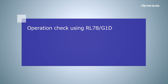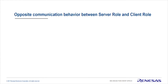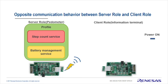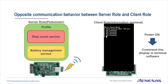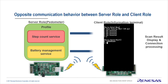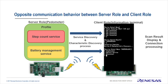Now to ensure everything works as intended, let's test the created profile. The operation uses the RL78G1D evaluation board. To test the server role, which is the pedometer, power on the evaluation board and the operation confirmation application will initialize the BLE advertisement automatically. Then use the client side or a generic BLE scanner app to test the connection. Scan the server role and connect, then access the service and characteristic values. You can confirm that the profile design on Bluetooth Developer Studio has indeed been created.